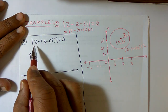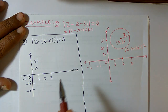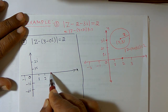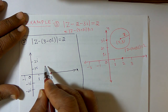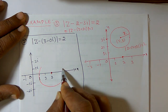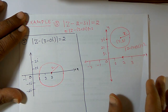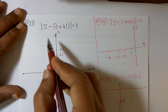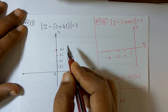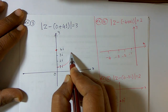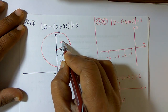Another example: mod of z minus 3 minus 0i is equal to 2. Here the center is on the real axis because the imaginary part is 0, so I draw a circle about 3 with radius 2. Or consider mod of z minus (0 plus 4i) is equal to 3; the center is 4i, at the point (0, 4), and I draw a circle with radius 3.